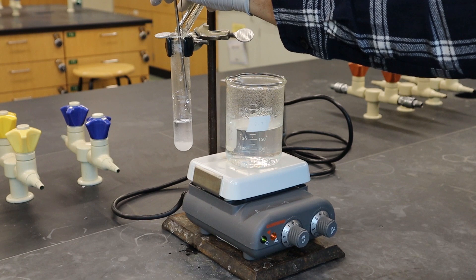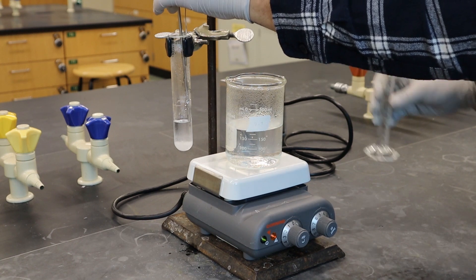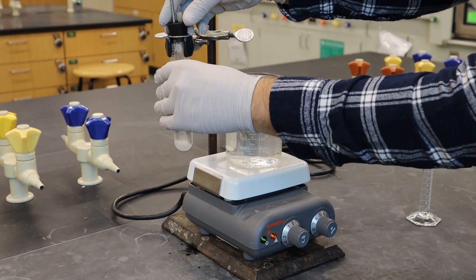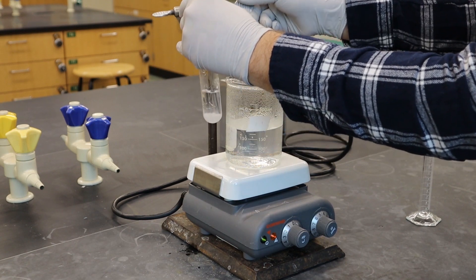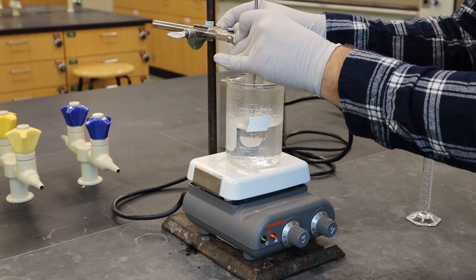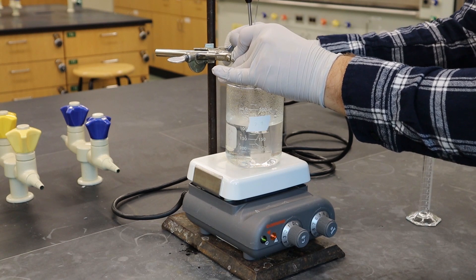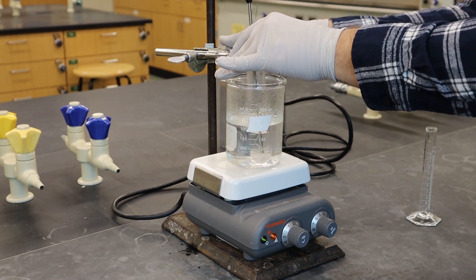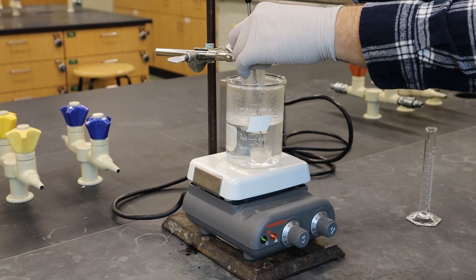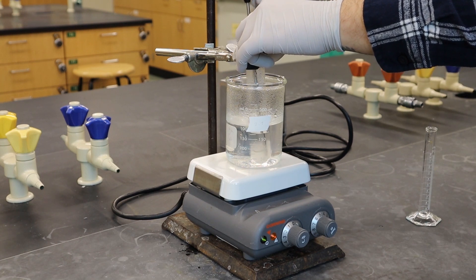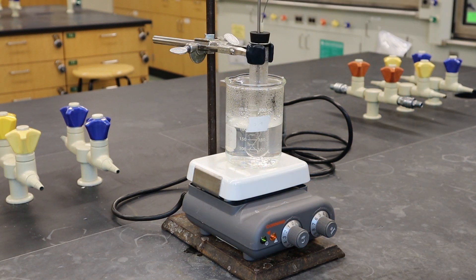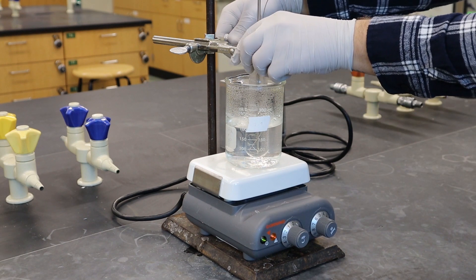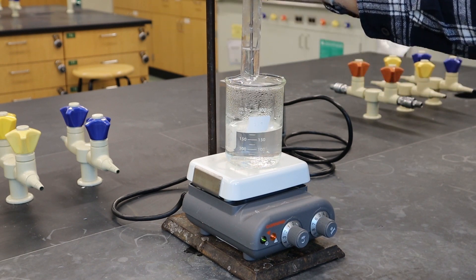So now you add more water, redissolve it again, and do the same thing. And so you're gonna get a series of saturated solutions at different concentrations because you're measuring them at slightly less concentration every time that you add more water. And you're then going to measure the temperature that you start getting the solid to form again. And so that's going to be a different temperature at each one of these different concentrations.